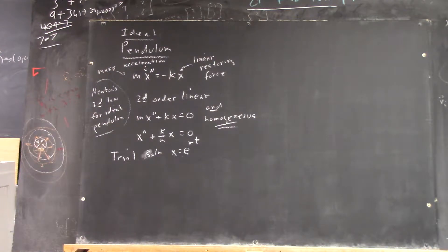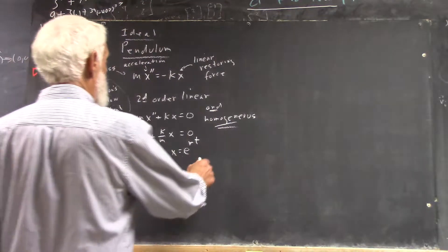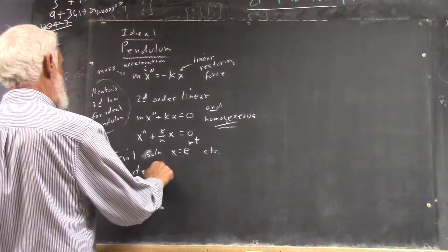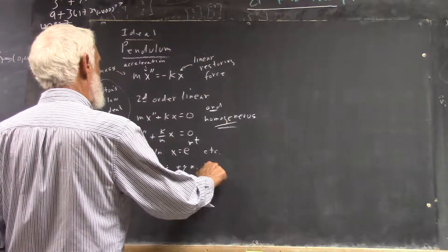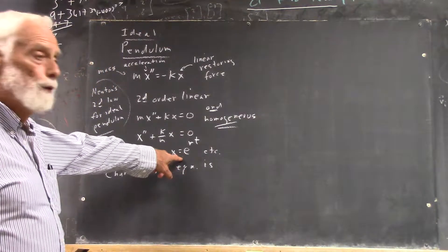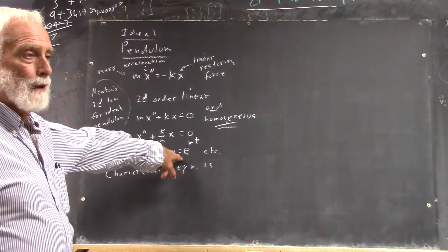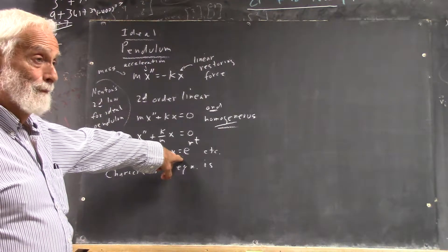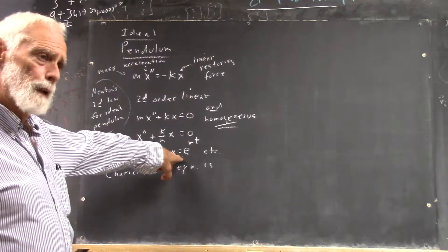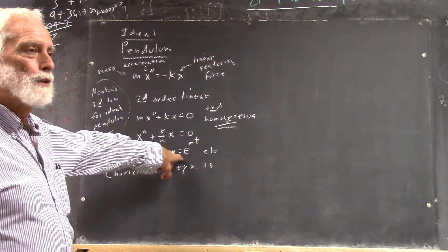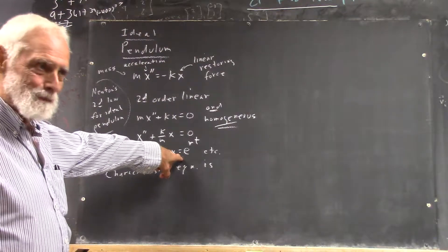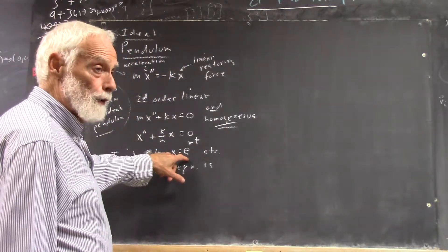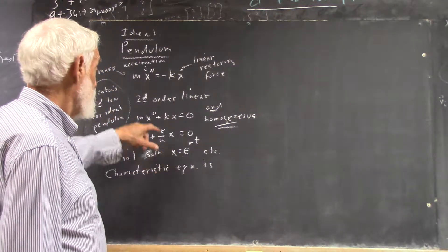We'll just use e to the rt. We could put a constant in front of this, but we kind of understand that a constant in front is going to change anything. It's the r that we're after. So, there it is. So, what's your characteristic equation? Well, what do you get if you take two derivatives of e to the rt? r squared e to the rt. Yeah. You get r squared e to the rt.